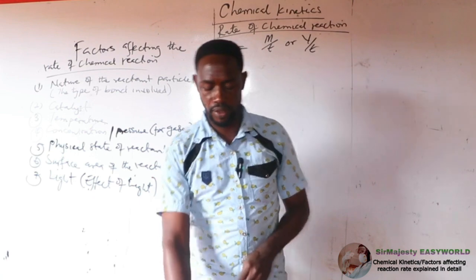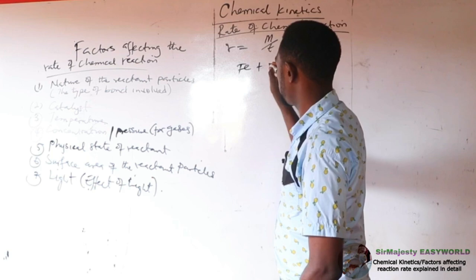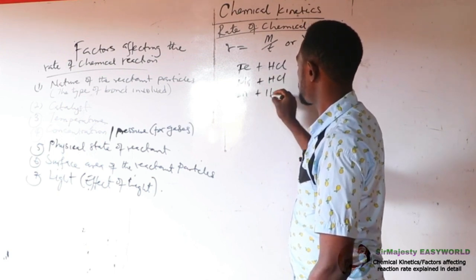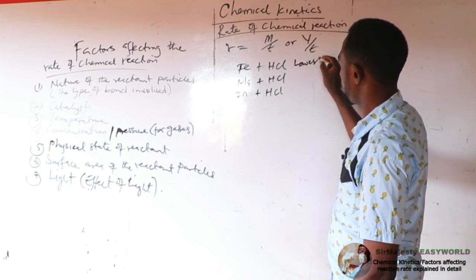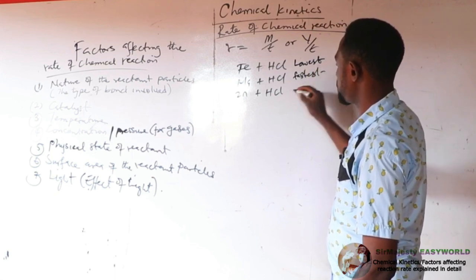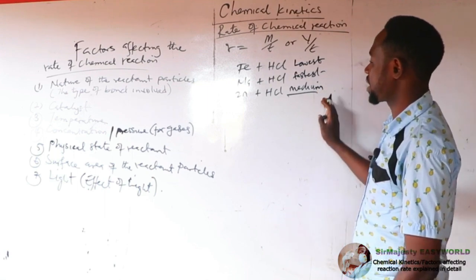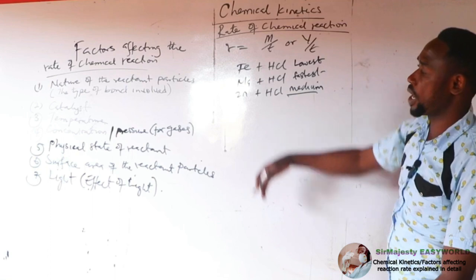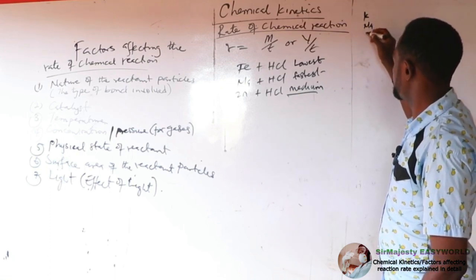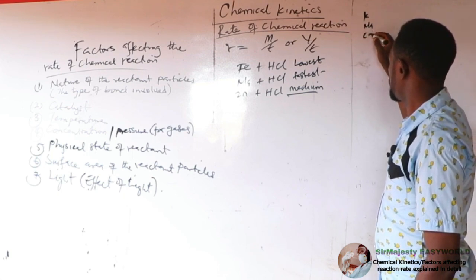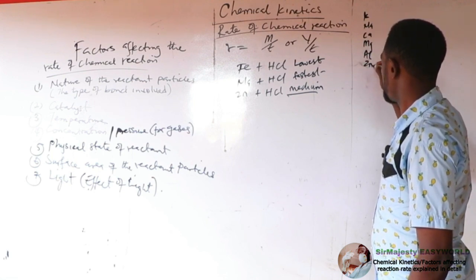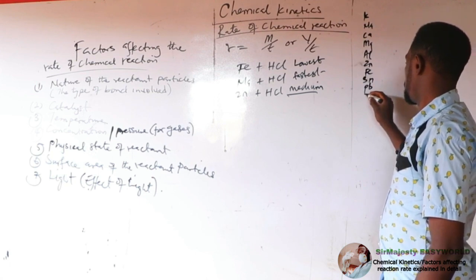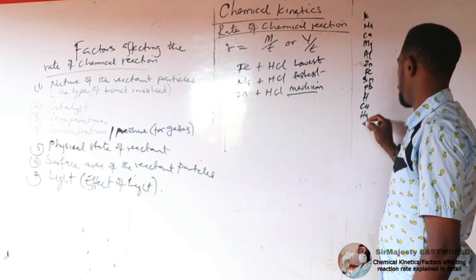Comparing iron vs HCl, zinc vs HCl, and sodium vs HCl: the rate of reaction will be lowest for iron because iron is lower in the activity series. The activity series goes: potassium, sodium, calcium, magnesium, aluminum, zinc, iron, tin, lead, hydrogen, copper, mercury, silver, gold. Zinc is higher than iron, while sodium is highest, so the rate of reaction is fastest with sodium.